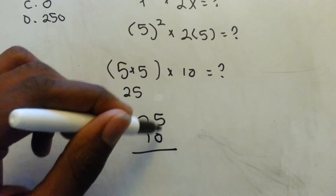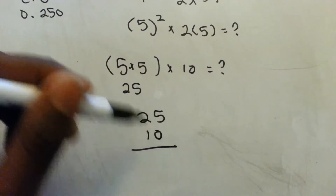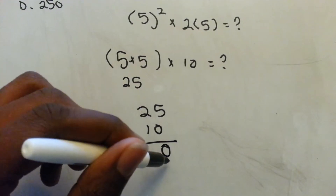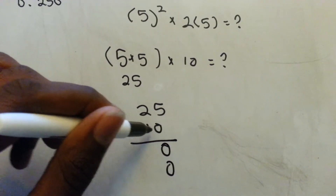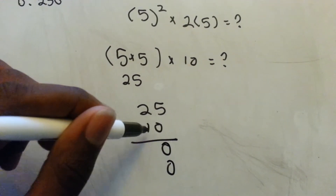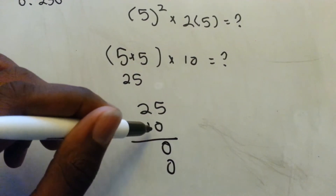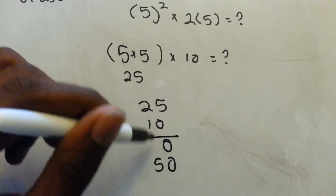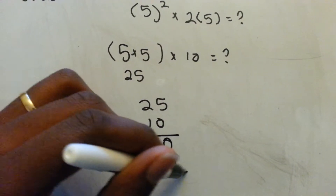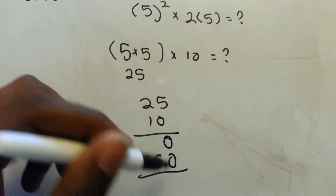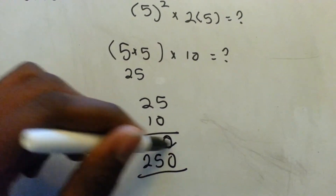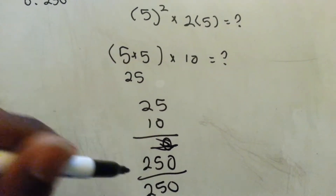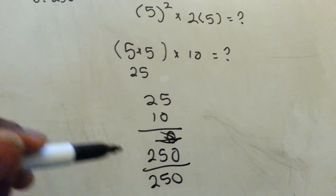Multiply it out. 0 times anything is going to be 0, so we just put 0 there. Then we put a placeholder for the tens place and multiply 1 through. 1 times 5 is 5, 1 times 2 is 2. Add them together — we're just adding 0. So this is 250.